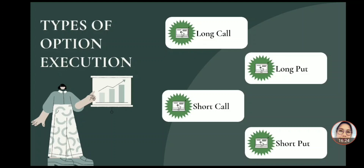Berikutnya yaitu long put: strategi ini dilakukan saat kita yakin harga sekuritas akan turun dan membeli right long untuk menjual atau put sekuritas. Sebagai pemegang long put, hasilnya akan positif jika harga sekuritas di bawah harga awal di mana harganya lebih dari premi yang dibayarkan untuk penjualan put tersebut. Ketiga, short call: strategi ini dilakukan saat kita yakin harga sekuritas akan turun dan menjual kepemilikan ini. Jika kita menjual kepemilikan tersebut, pihak lawan atau pemegang long call memiliki kendali atas opsi yang akan dieksekusi.